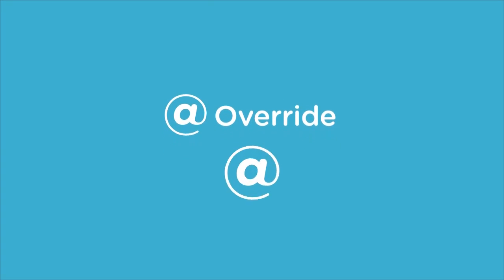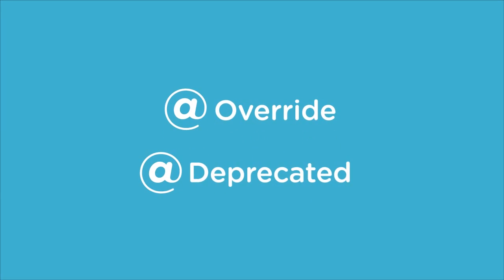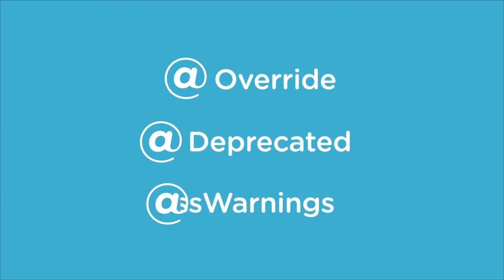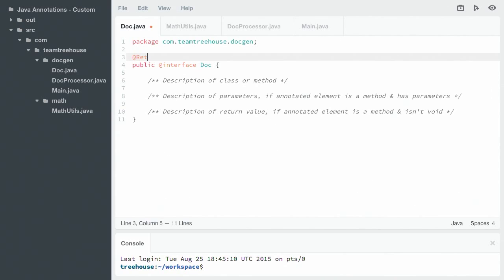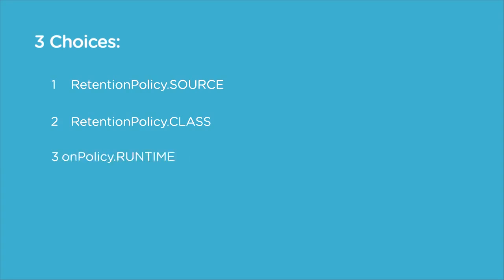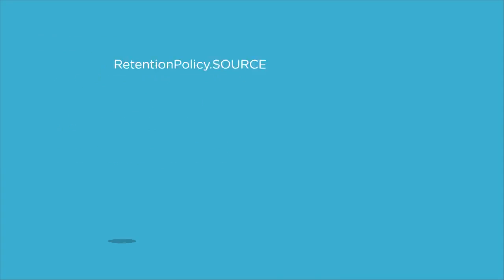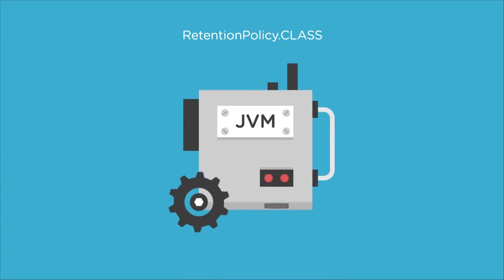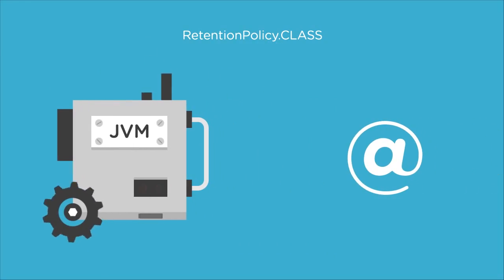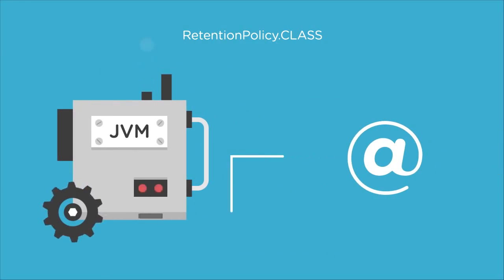During the first part of the course, we'll discuss and practice the use of annotations that are built into the Java core library. In the second part, we'll write our own Java annotation and explore more advanced programming techniques that can help us check our Java classes for annotations that might be present.